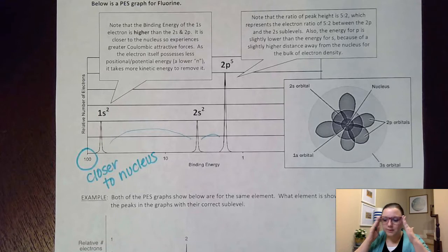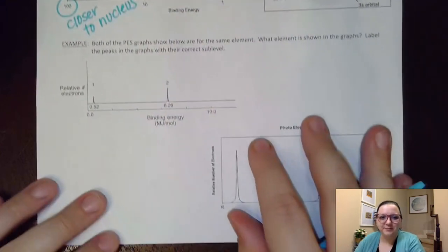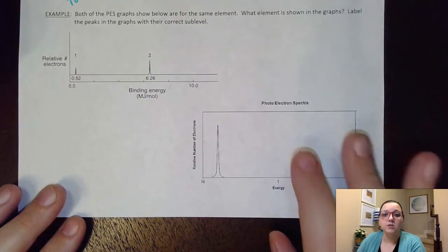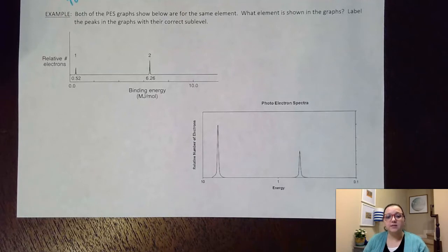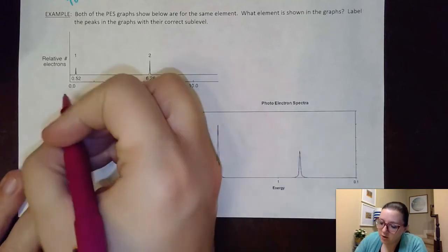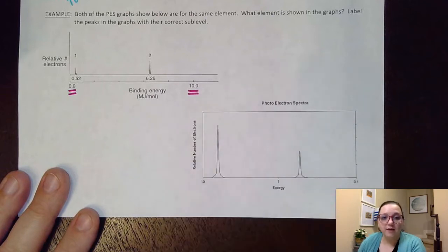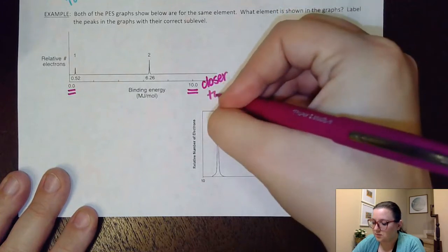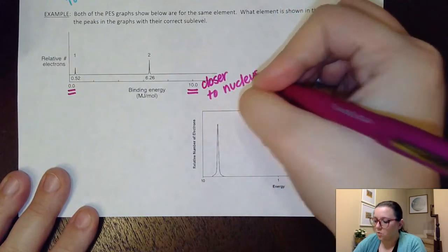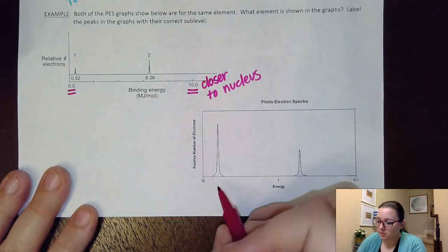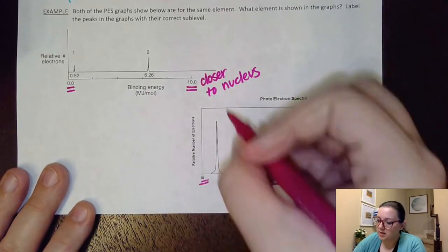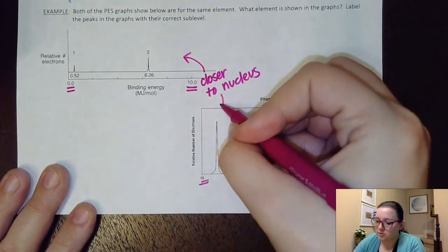All right, so let's look at one other one. Actually, it's kind of a two-for-one down here. It says here that we have two PES graphs and both of them are for the same element. Which element is shown in the graphs? Label the peaks with their correct sublevel. So you can see here these look really similar, but the big difference is that on this first graph, notice the high energy end of the graph is down over here. So that means this is closer to the nucleus, where on this particular graph, that closer to the nucleus end is down over here, because here's my energy of 10 versus 0.1. Obviously, that's really low. So again, these two ends of it are my closer to the nucleus end.